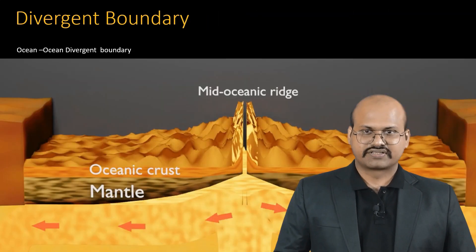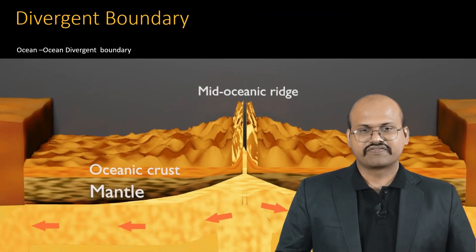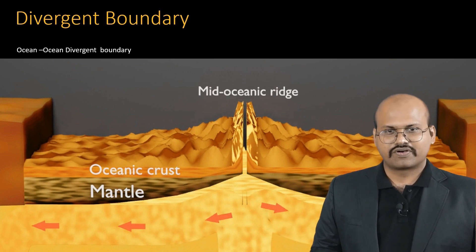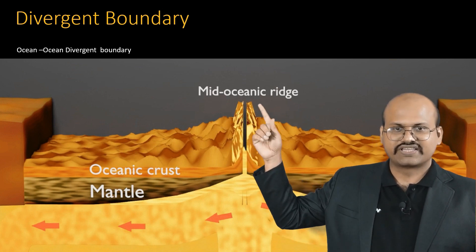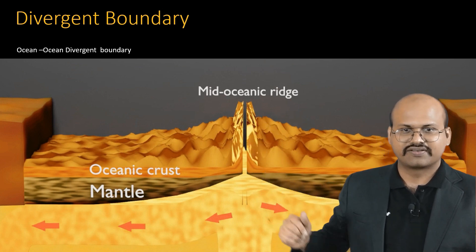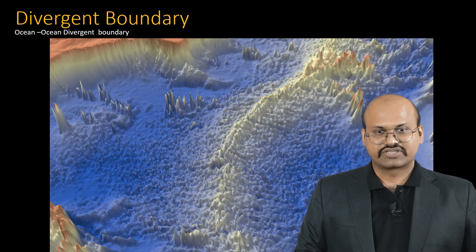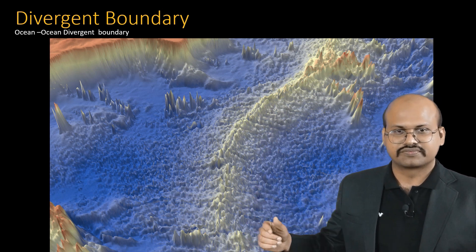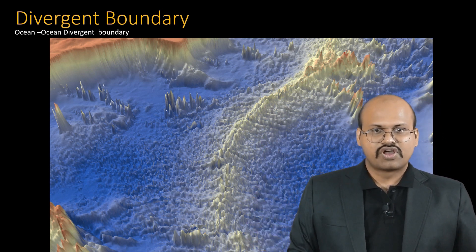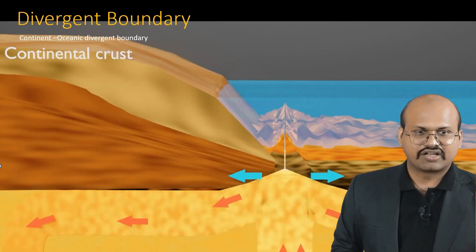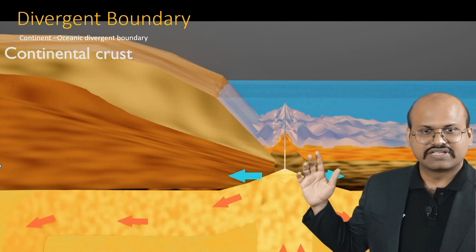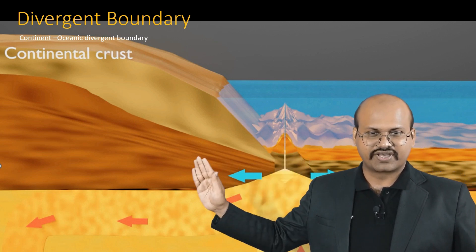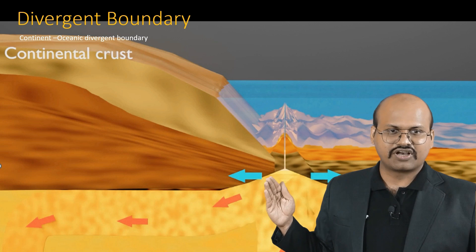At ocean-ocean divergent boundaries, two oceanic plates move away from each other, forming a mid-oceanic ridge with a long chain of mountains separated by a rift valley. The Atlantic Ocean's mid-oceanic ridge is the best example. Ocean-continent divergent boundaries are rarely found because they quickly convert into ocean-ocean divergent boundaries as new oceanic floor forms when the continent moves away.